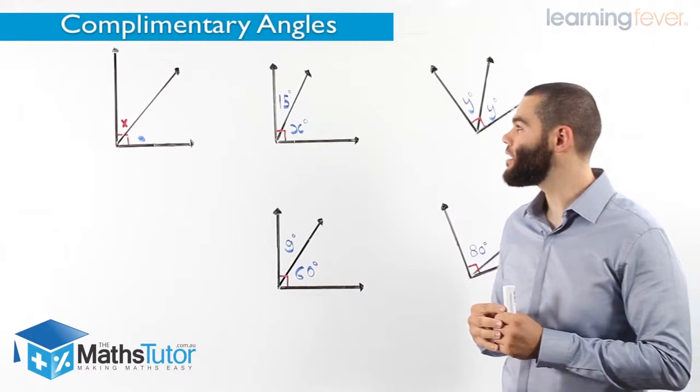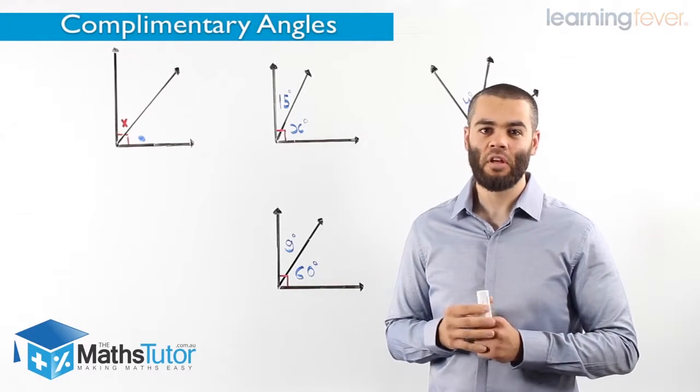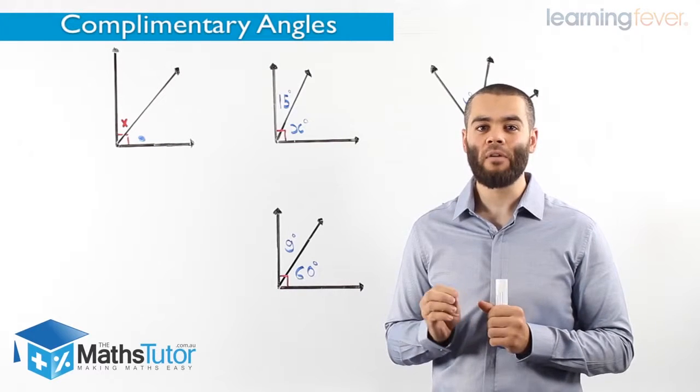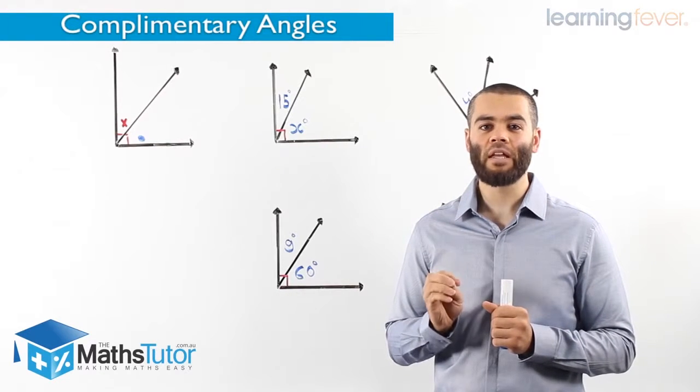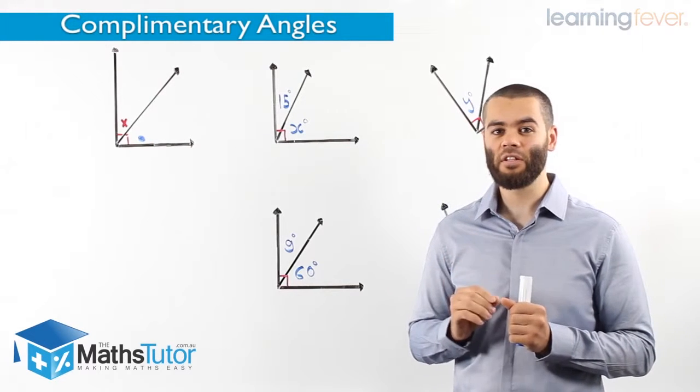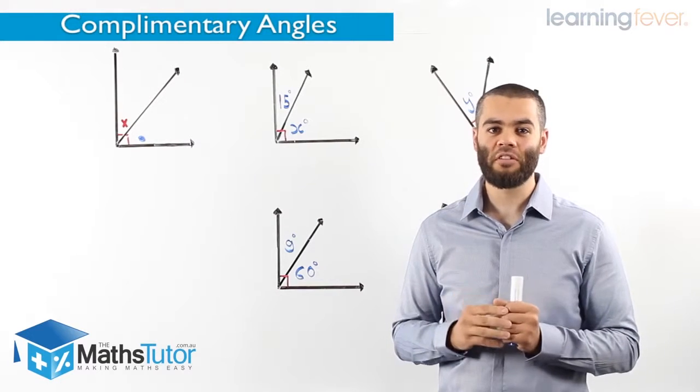Now what we're going to look at today are what we call complementary adjacent angles. They're a type of adjacent angles where they are sitting side by side, however they're special because they add up to 90 degrees. So they're adjacent angles, but they are called complementary adjacent angles.